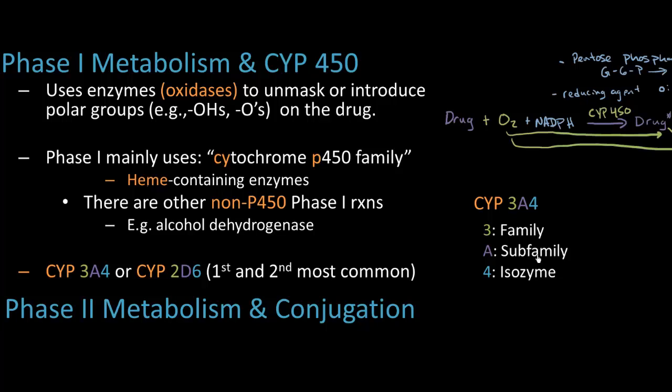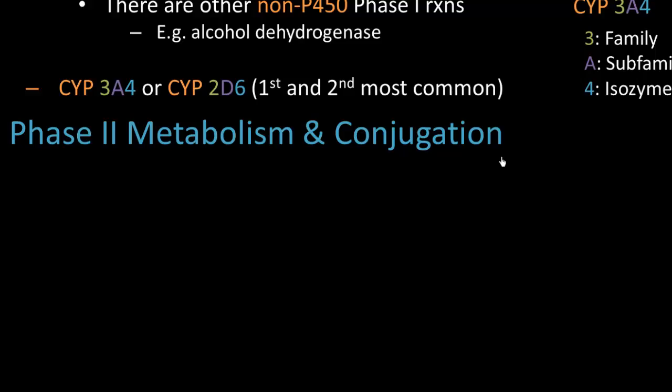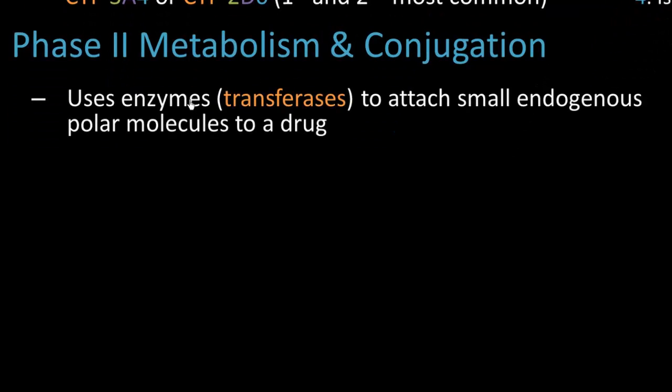We're going to break this up now and look at phase 2 metabolism which are conjugation reactions. So in phase 2 metabolism, instead of using oxidases, we're using enzymes called transferases. And like the name sounds, we are transferring small polar molecules onto a drug.